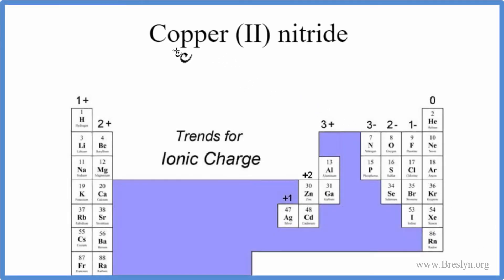In this video we'll write the formula for copper (II) nitride. Copper is a metal, actually a transition metal, and nitride is nitrogen, a nonmetal. So you have a metal and a nonmetal - that means it's ionic and we need to think about charge when we write the formula.